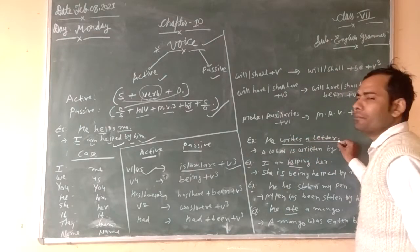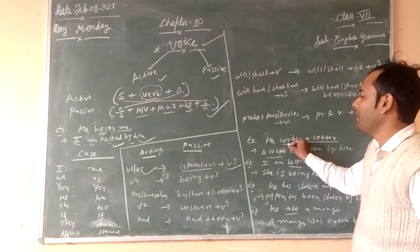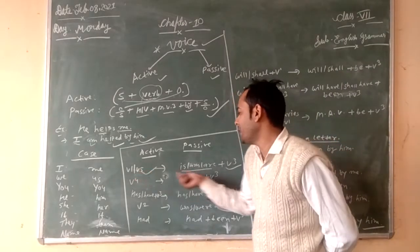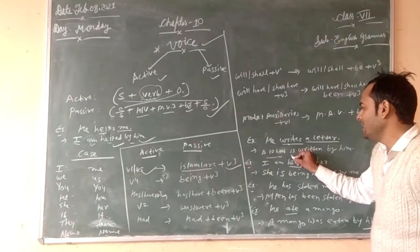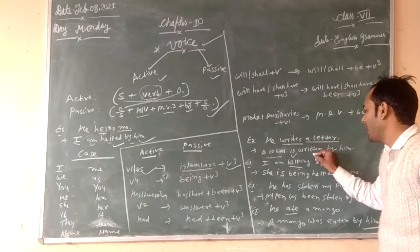If you have a subject in active voice, it is V1 or V5. In passive voice, it's is/am/are plus verb 3. The pattern is similar.